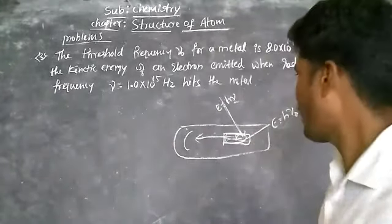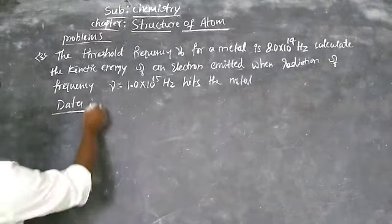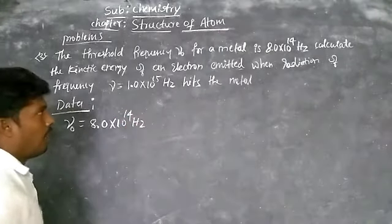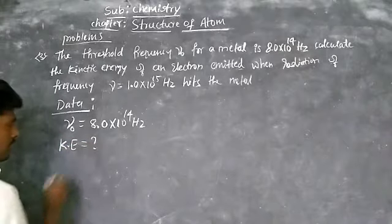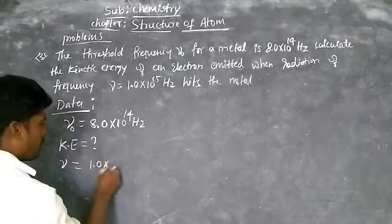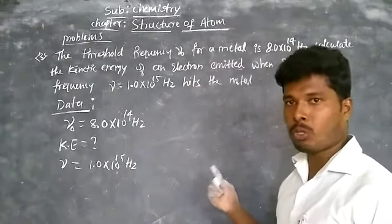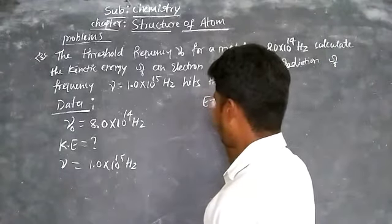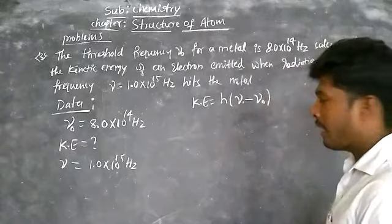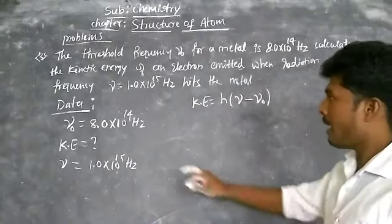Now take the formula and solve. The given data: nu-naught (threshold frequency) is 8 × 10¹⁴ hertz. Calculate the kinetic energy of an electron — that is the asked quantity. The incident radiation frequency is nu equals 1.0 × 10¹⁵ hertz.